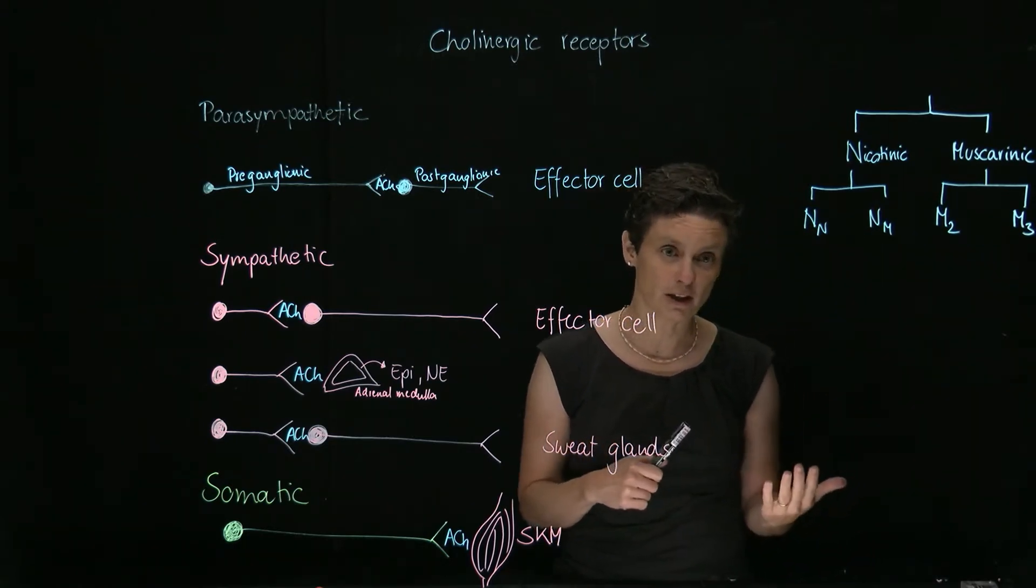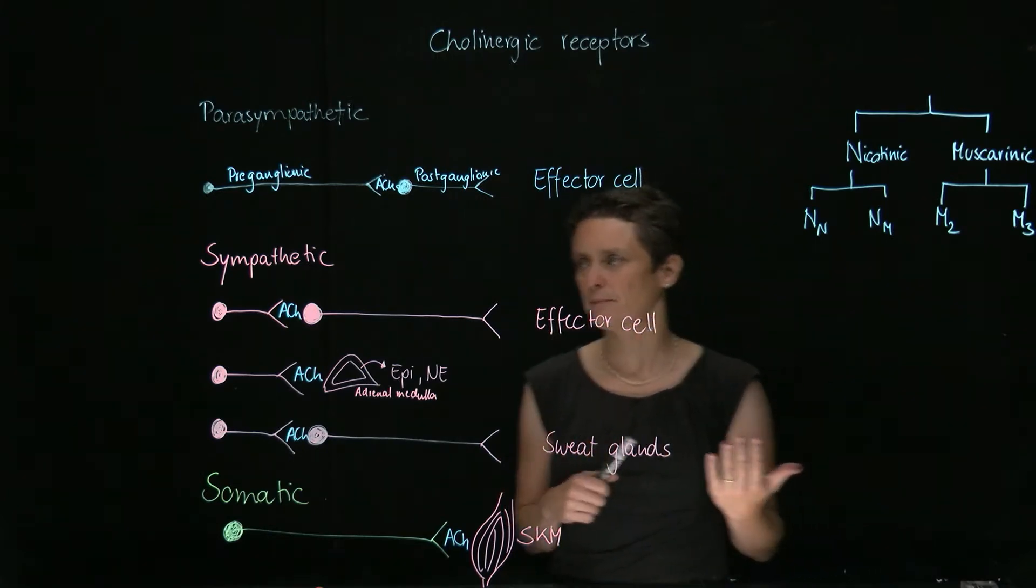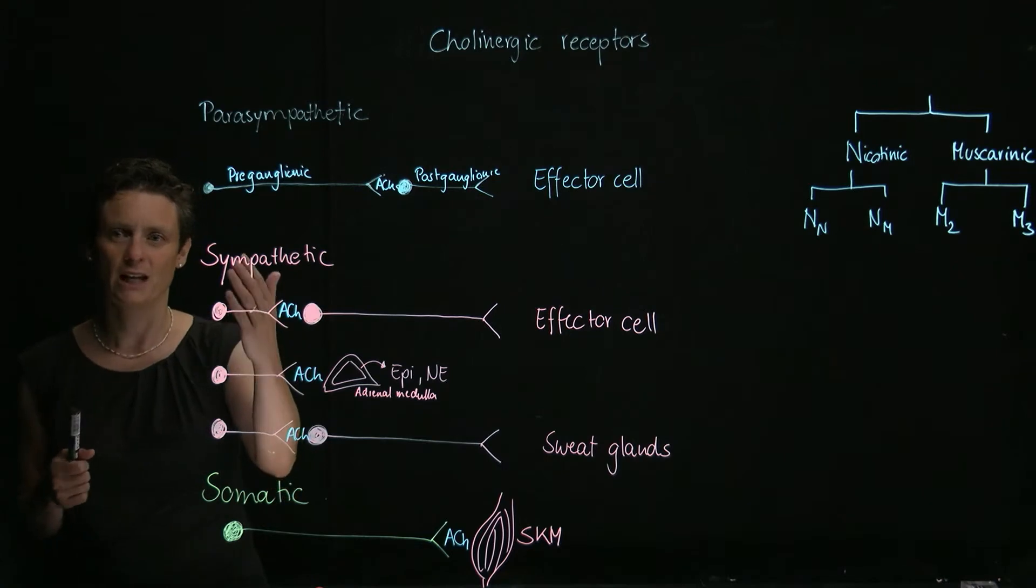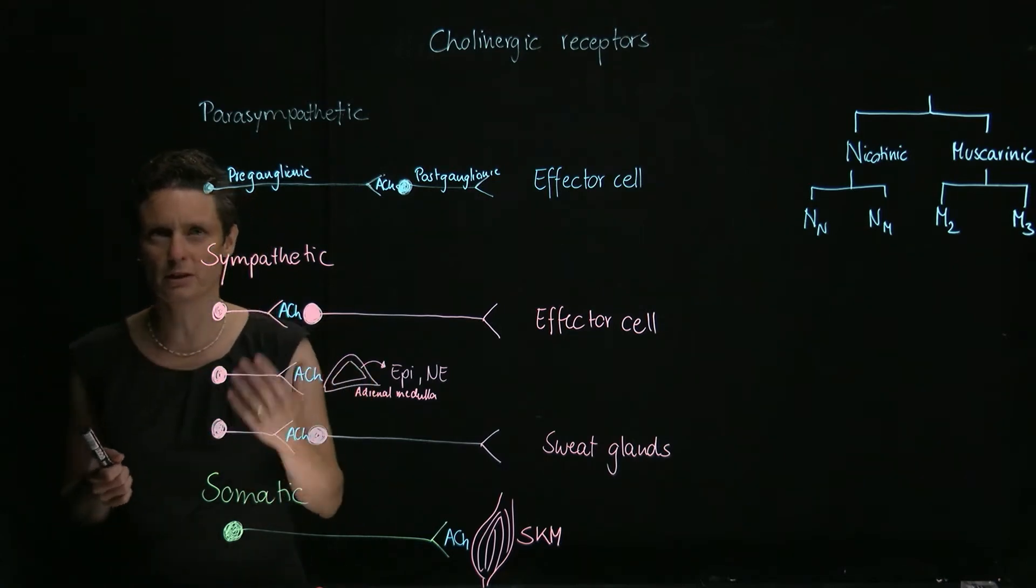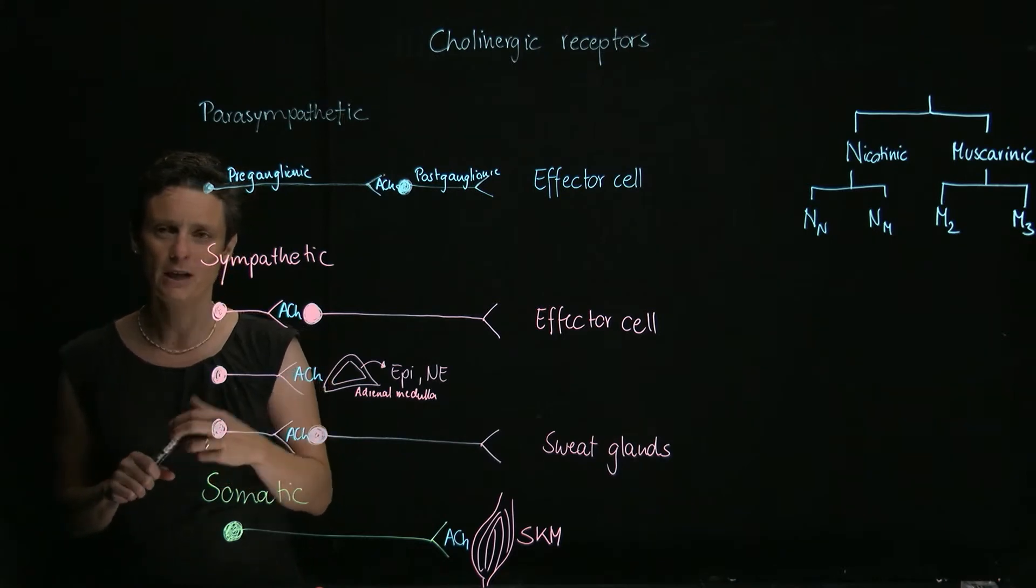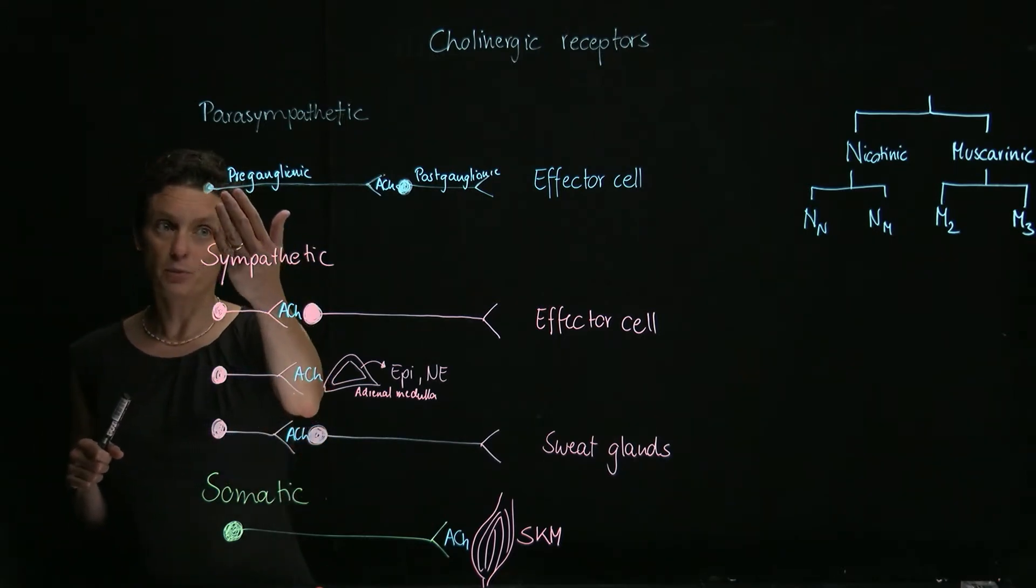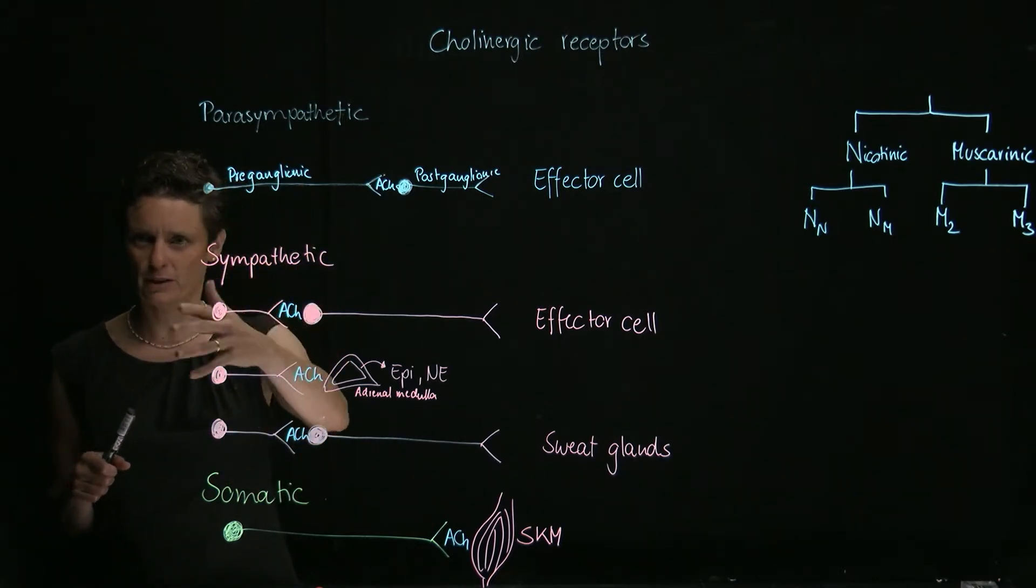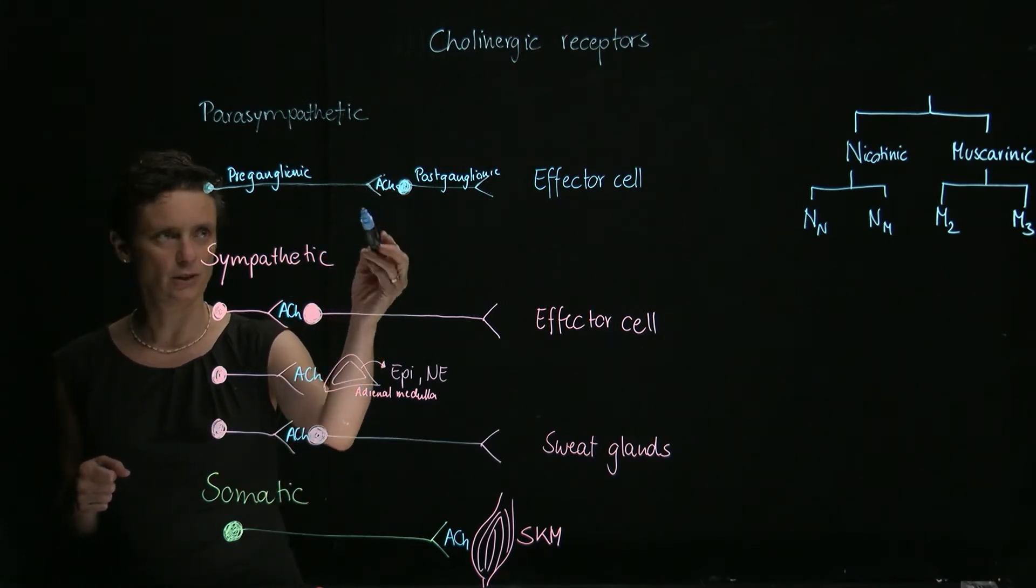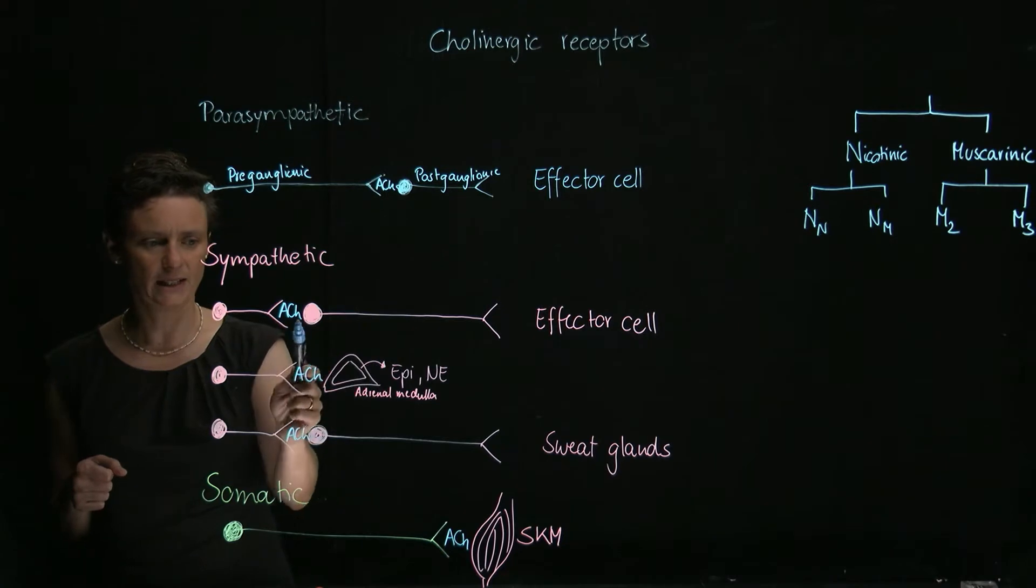So let's first look at where they are found. If we move over to our favorite figure, which shows the two-neuron system of the parasympathetic and sympathetic nervous system, we're going to remember that the preganglionic neuron, or every neuron that comes from the CNS, is going to release acetylcholine. So we find acetylcholine here, here, here, here.